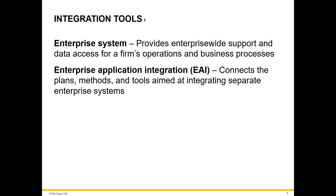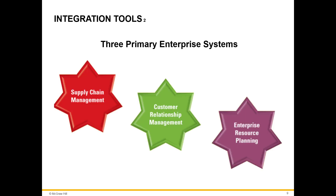Enterprise systems provide enterprise-wide support and data access for a firm's operational and business processes. Enterprise application integration connects the plans, methods, and tools aimed at integrating separate enterprise systems. There are three enterprise systems within an organization: supply chain management, customer relationship management, and enterprise resource planning.